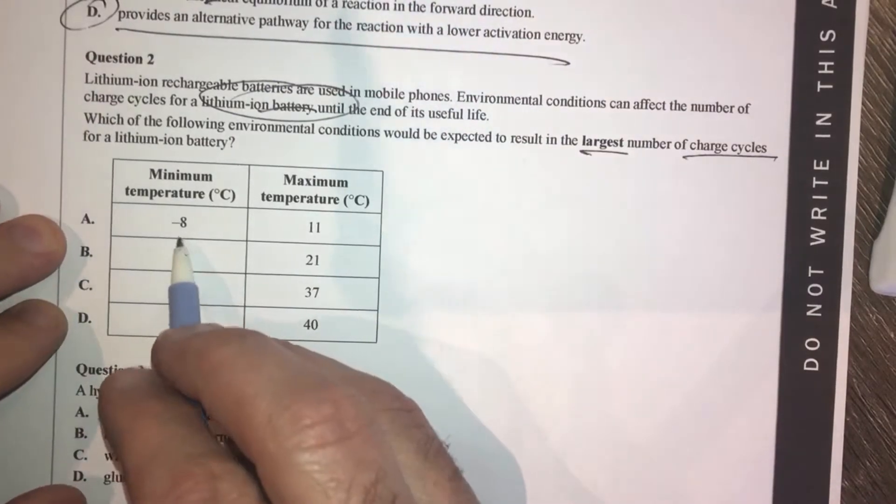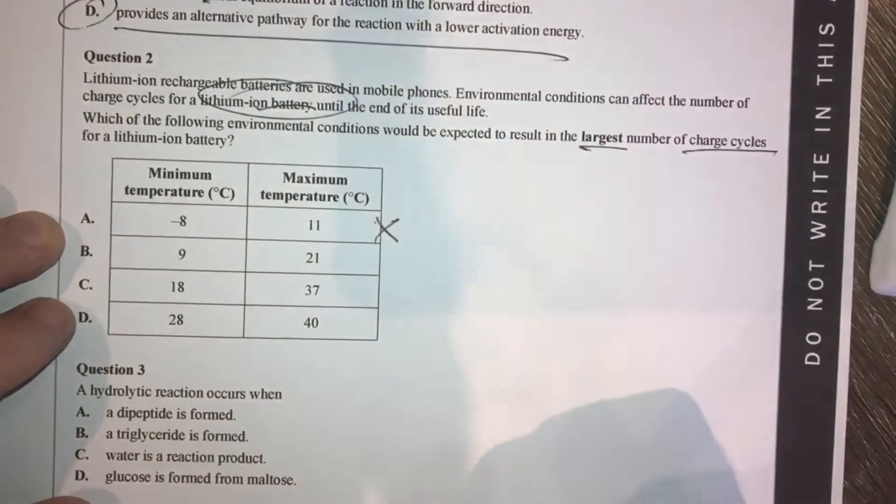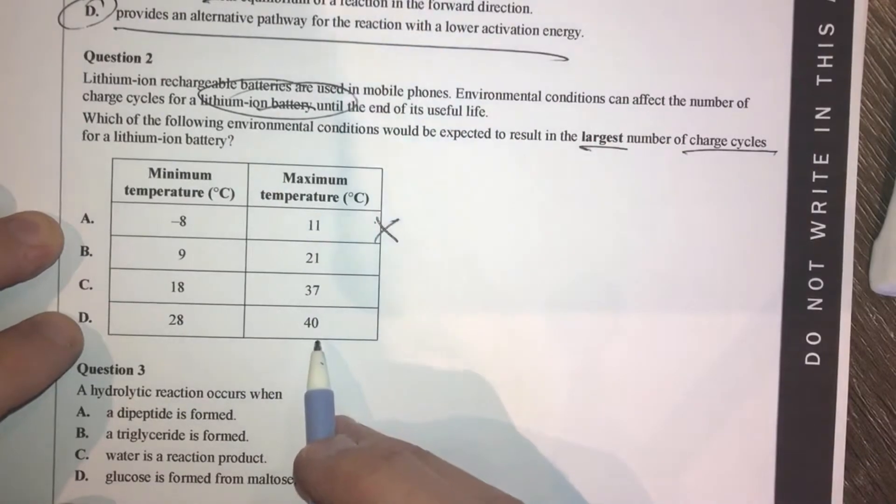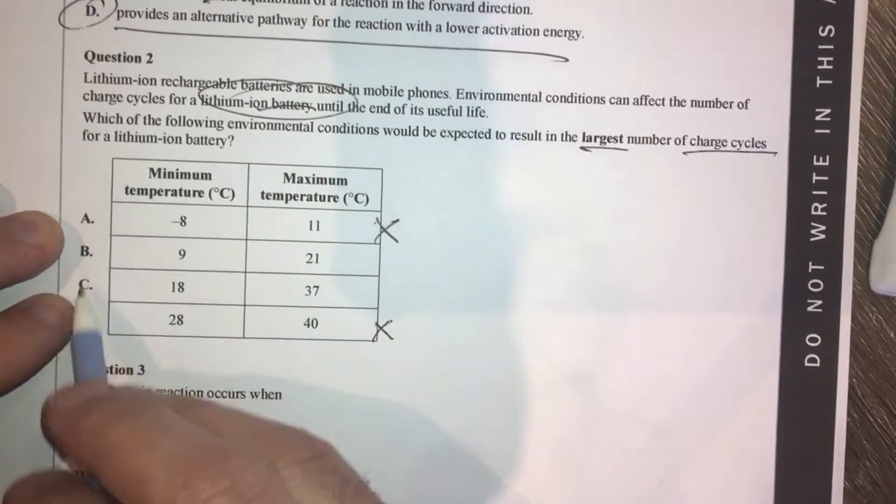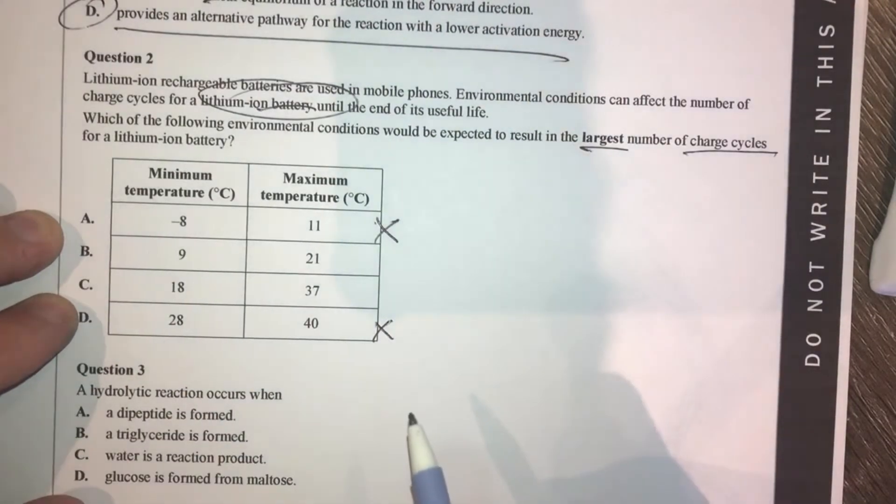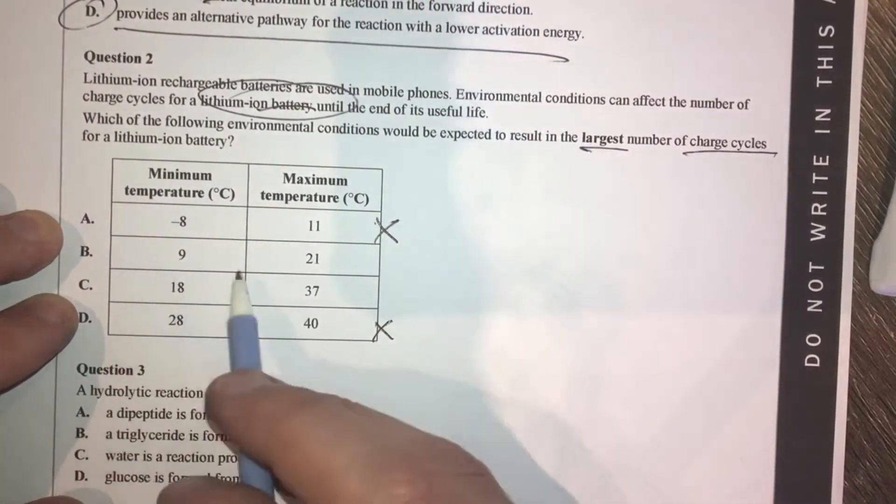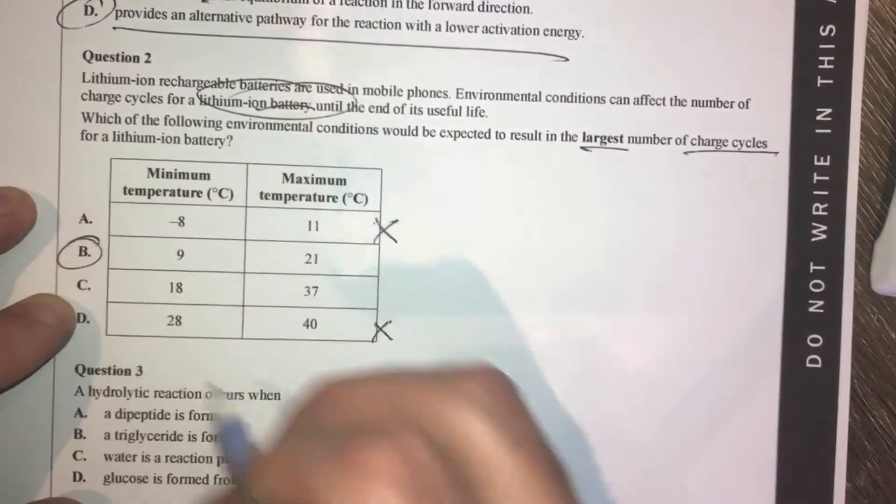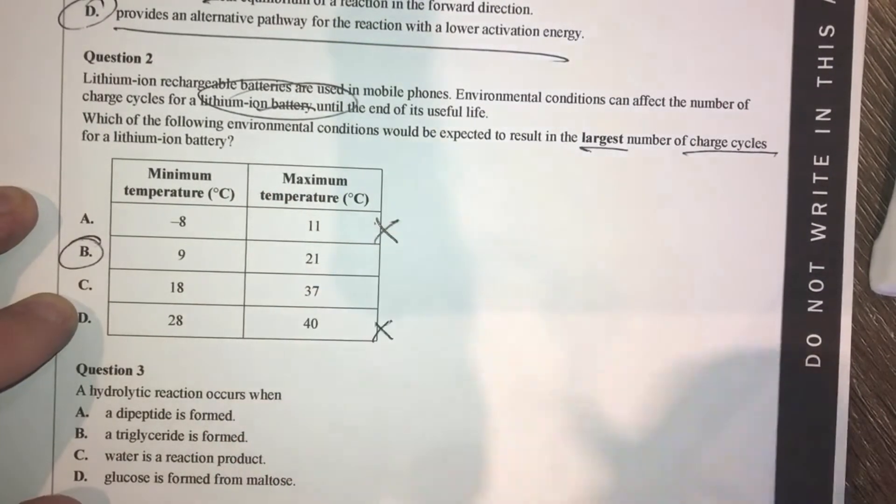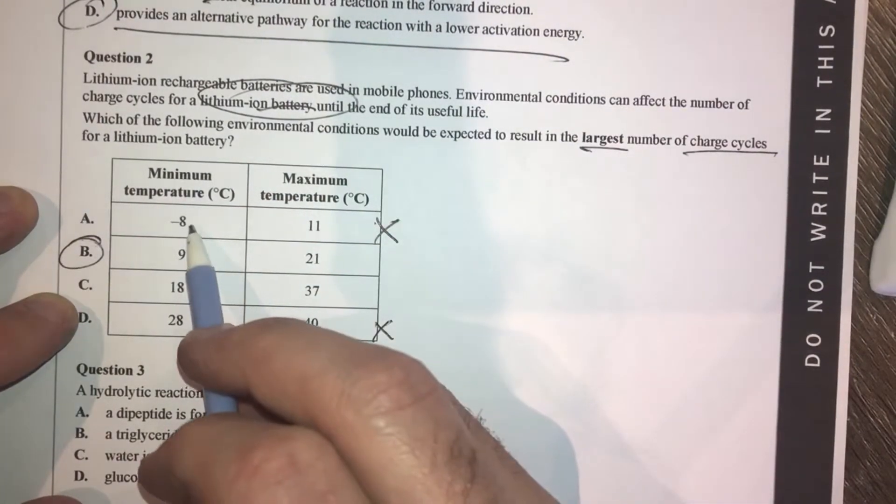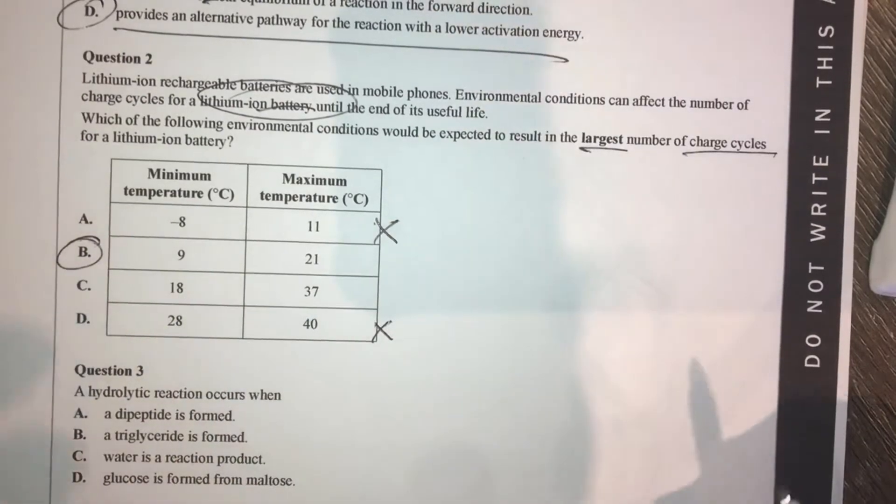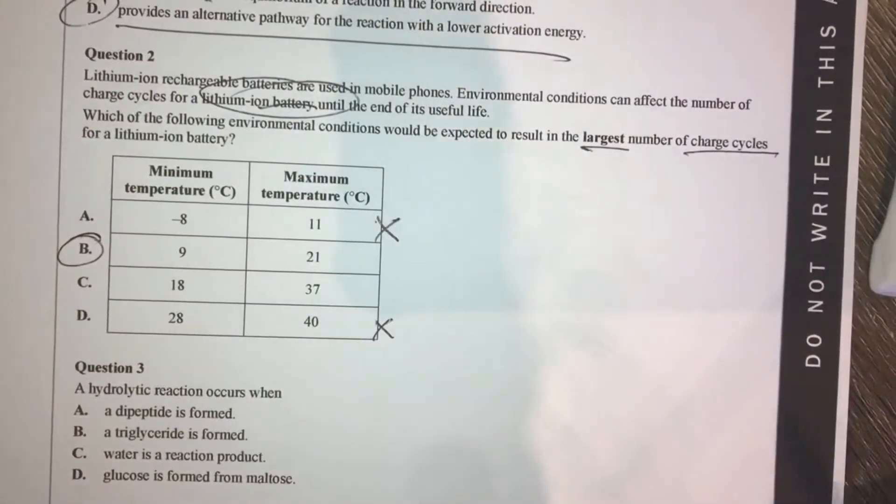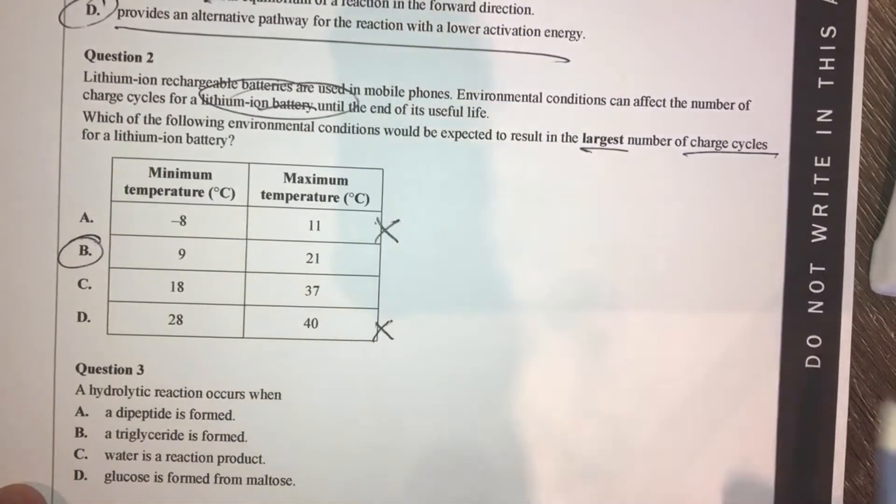So negative degrees Celsius, probably not going to be that one. 40 degrees, a hot day, is probably also not ideal. I'm looking between B and C. Colder to room temperature it would be B. I'm going to go with that one. I'm not 100% sure on that one, but looking at that, definitely wouldn't go with the top and bottom there. I'm looking at the middle range of temperatures, because batteries, room temperature is kind of where they like to sit, especially things that are used in everyday appliances.